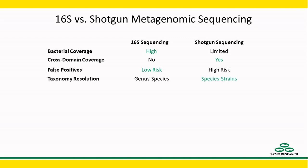Shotgun can achieve a higher taxonomic resolution. Shotgun sequencing can be affected by host DNA contamination, but there are host depletion methods available to help. The total gene coverage of shotgun enables metabolic function analysis.